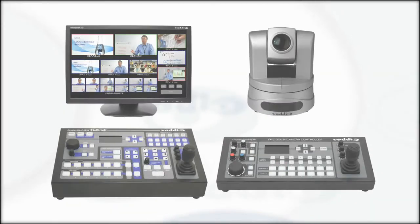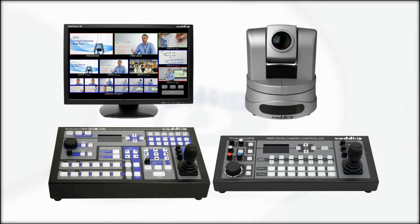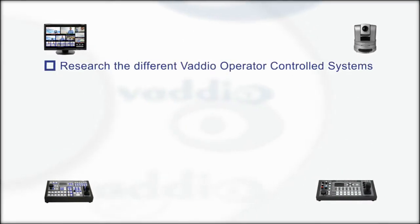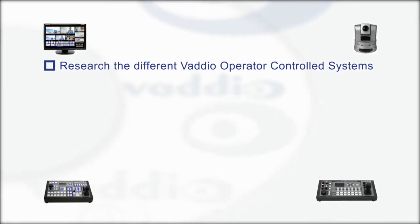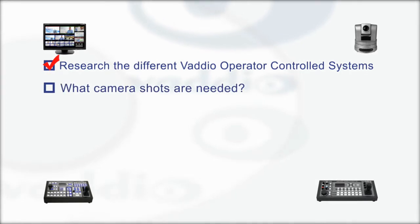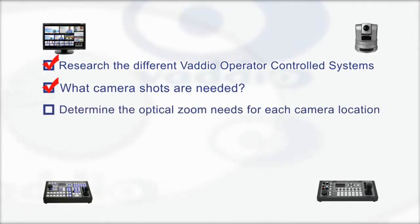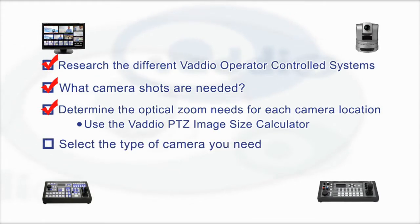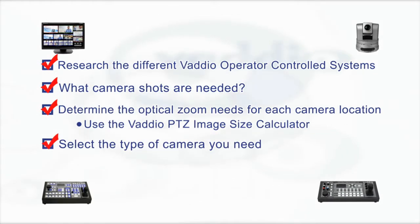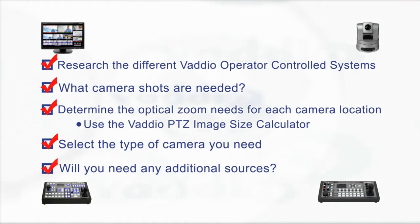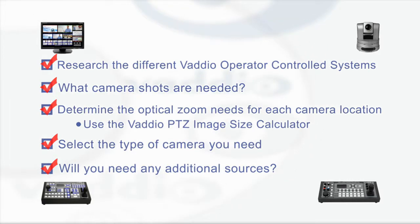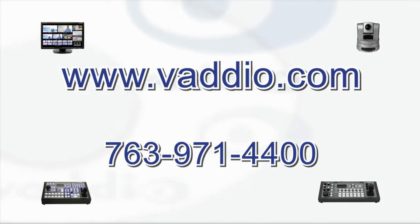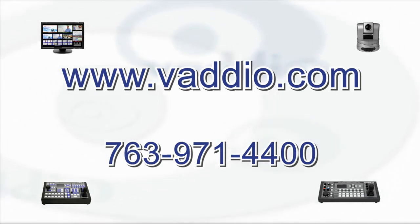Now that we have covered the main points to consider when designing an operator-controlled camera system, let's do a recap. Research the different Vaddio operator-controlled systems to determine which one offers the features you need, what camera shots are needed and how many cameras are required, determine the optical zoom needs for each camera location using the Vaddio PTZ image size calculator, select the type of camera based on the environment of your application, and identify any additional sources needed. Find out more about Vaddio's line of video switchers, joystick controllers, PTZ cameras, and other products at www.vaddio.com or contact the sales department.